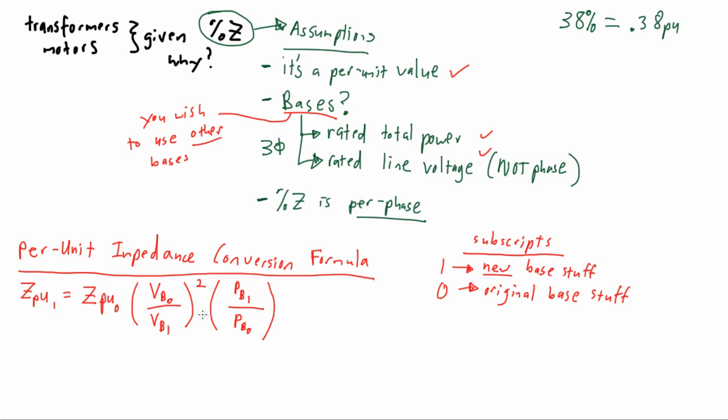Often times when using this formula, you'll not need to change the voltage and the power bases. Sometimes you can keep them the same as the ones you've selected originally. If that's the case, then all you need to do is supply the same numbers in the numerator and the denominator, and essentially it goes away, like I've demonstrated here in power and in voltage.